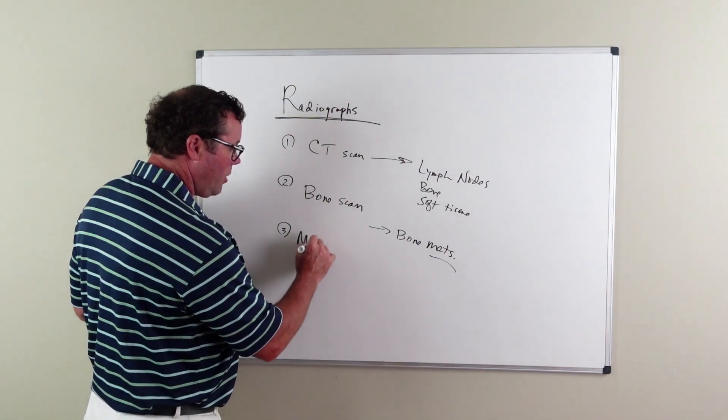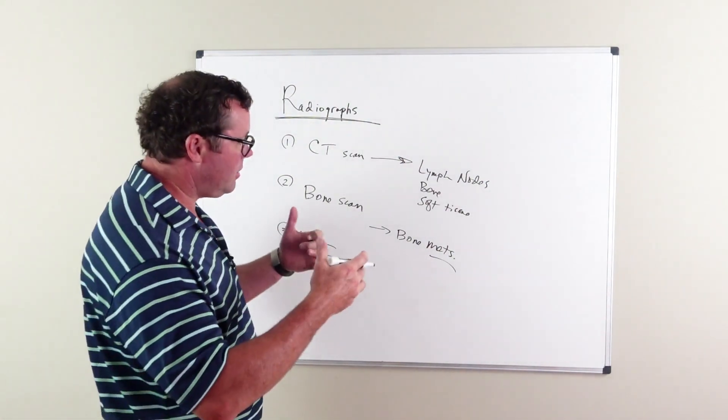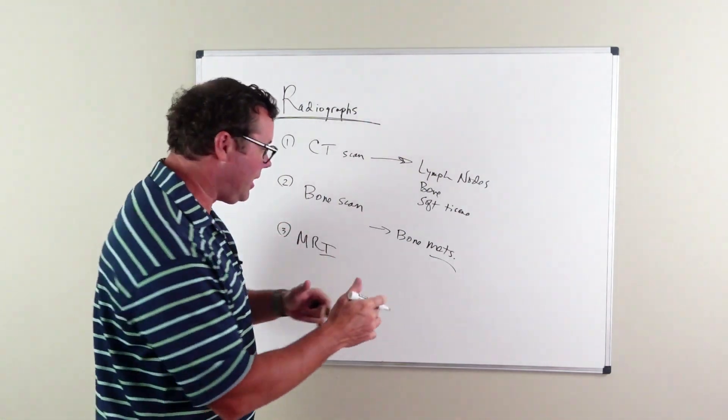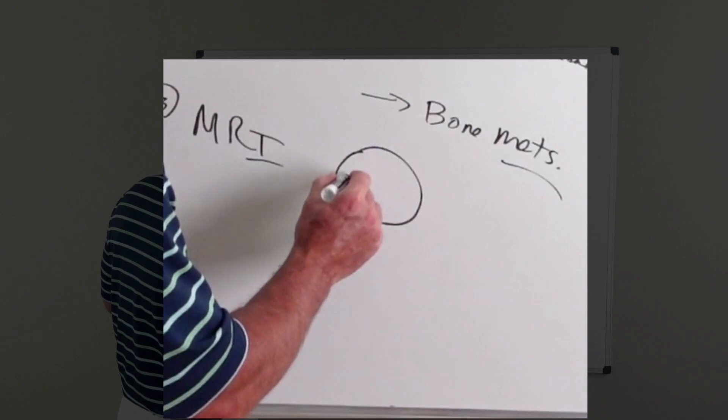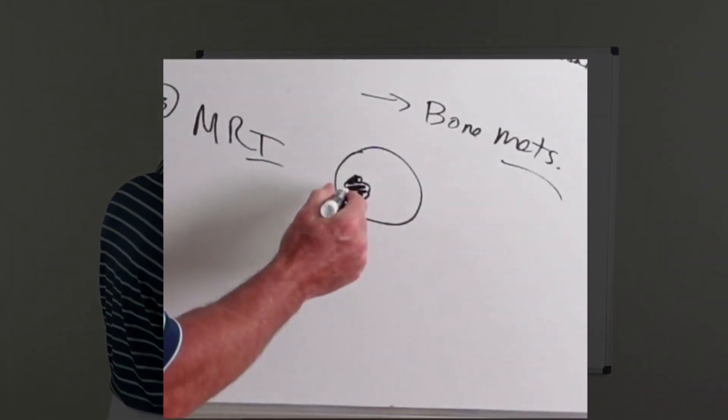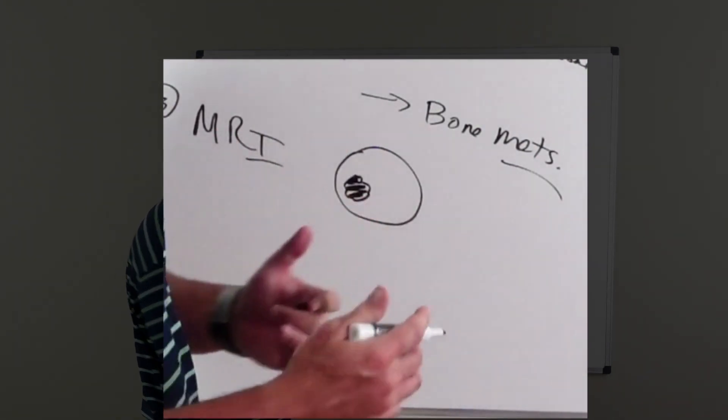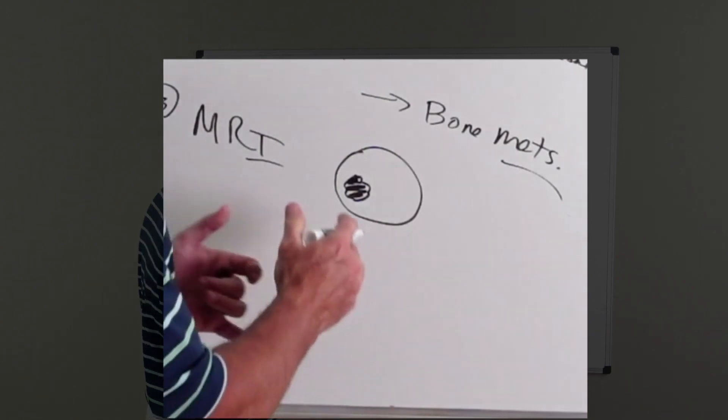The third x-ray is MRI. This is an x-ray that looks specifically at the prostate gland. It can show you cancerous lesions within the prostate and the location of these cancerous lesions. Is it close to the seminal vesicles?